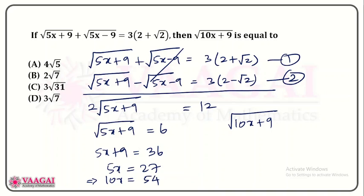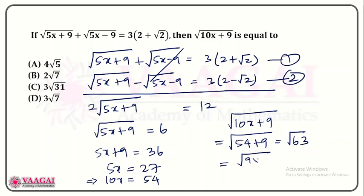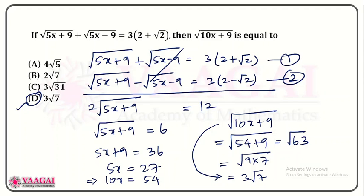Substituting 10x equals 54, we get root of (54 plus 9) which is root of 63. Root of 63 simplifies as root of 9 times 7, which is 3 root 7. So the answer is 3 root 7, matching option D. This is a very nice problem involving both number properties and algebra. Thanks, we'll catch up with another interesting question in the upcoming session.